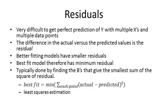There's also something else in multiple regressions: residuals. It's very difficult to get a perfect prediction of response variable y given multiple predictor variables across many data points. The difference between the actual value and the predicted value is the residual. Better fitting models have smaller residuals, and the best fit has the minimum difference between actual and predicted values. This is typically done by finding the b's that give the smallest sum of squares of the residual — called least squares estimation.